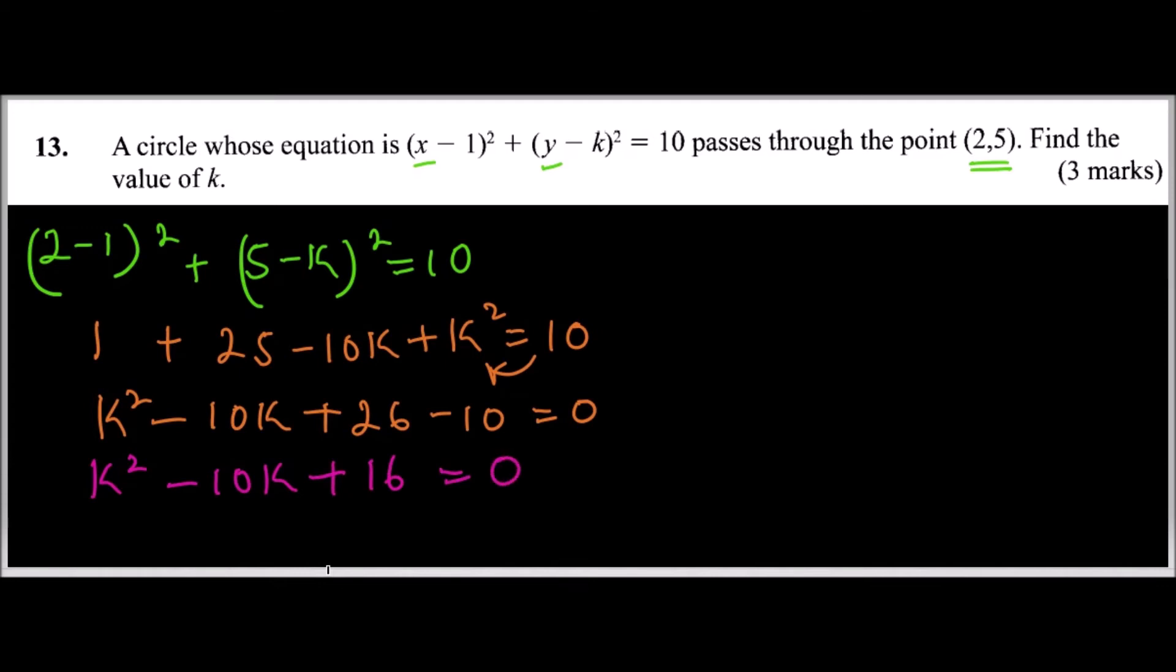So this is a quadratic equation and what you need is to get two numbers such that when you add them you get minus 10, when you multiply them you get 16. So we can write the numbers are minus 8 and minus 2: -8k - 2k + 16 = 0. But you can write direct factors if you are comfortable, but since we are revising let's go through the process.